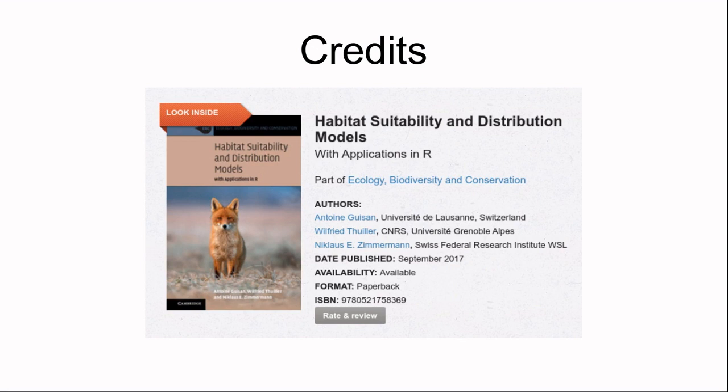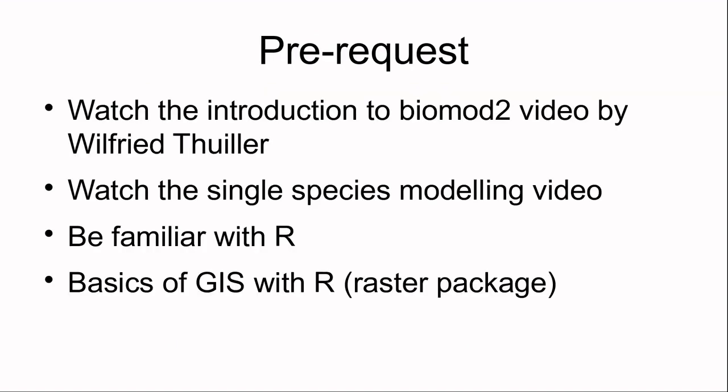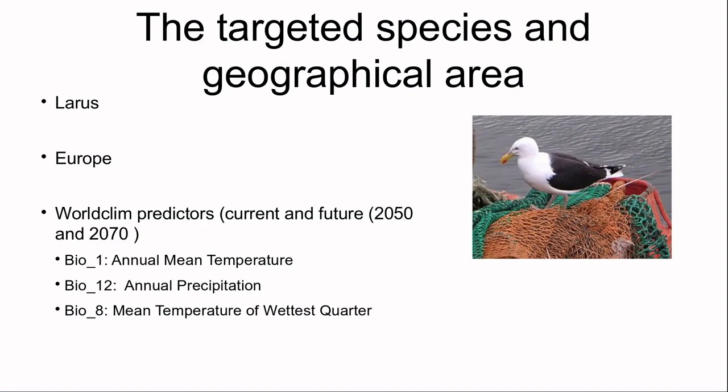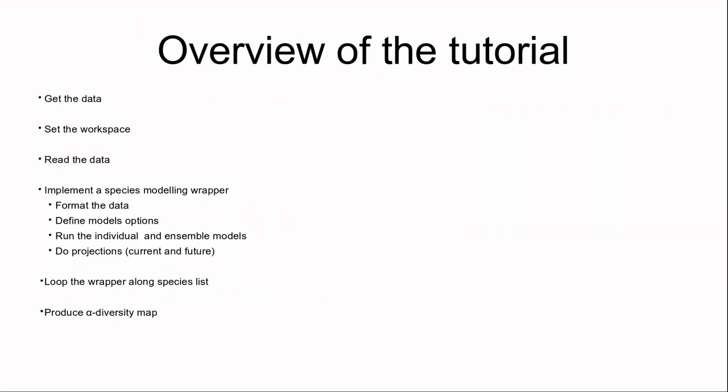The last step is to produce our alpha diversity map. We need to load our model projections. For every single species, I define the path to the current projection for the weighted mean algorithm in binary format. We want to use the binary version of the projection because the alpha diversity map is based on presence and absences of species. I start by loading the projection for the first species, then use a for loop to add all other species projections. The same approach applies for the 2050 and 2070 conditions. Let's run this bit of code — we have now produced three alpha diversity maps for current, 2050, and 2070, which we can display with the levelplot function from the raster package.